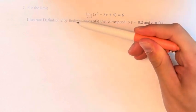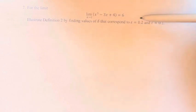Illustrate definition 2 by finding values of delta that correspond with epsilon equal to 0.2 and 0.1. So first, what is definition 2?